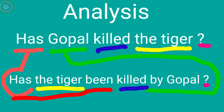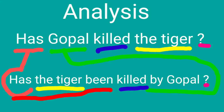Next example: 'Has Gopal killed the tiger?' This is present perfect tense, so we use 'has been' plus V3. The tiger, as the object, is taken as the subject. Since there is 'has', we add 'been', then 'killed' (V3), and 'by Gopal'. Gopal goes to the agent position 'by Gopal'. It is in question form, so add a question mark at the end.